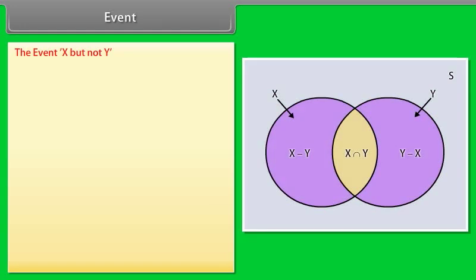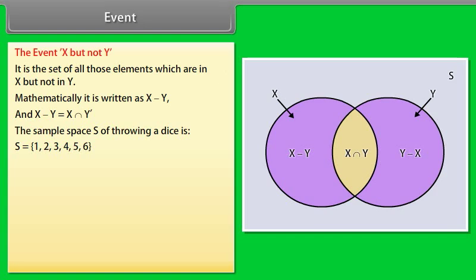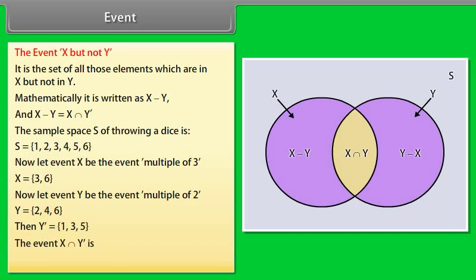The event X but not Y is the set of all elements which are in X but not in Y. Mathematically, it is written as X minus Y, and X minus Y = X intersection Y′. In an experiment of throwing a dice, S = {1, 2, 3, 4, 5, 6}. Let X be 'multiple of 3': X = {3, 6}, and Y be 'multiple of 2': Y = {2, 4, 6}. Then Y′ = {1, 3, 5}, and X intersection Y′ = {3}.